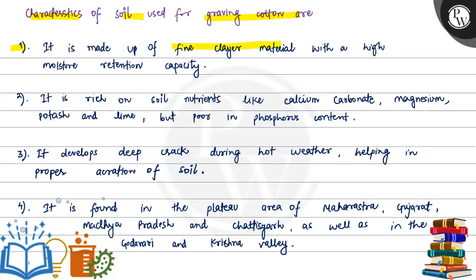First, it is made up of fine clay material with high moisture retaining capacity. So black soil is made up of fine clay material with moisture retaining capacity.